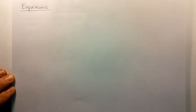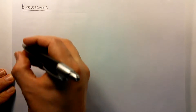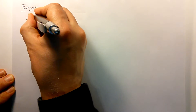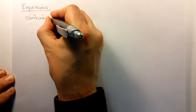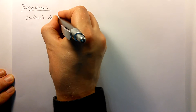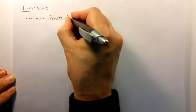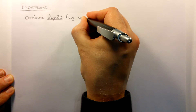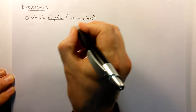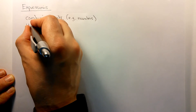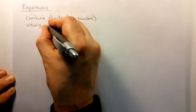Hello there and welcome to another tutorial. In this tutorial I'm going to describe how we form expressions in mathematics, and this will help us to form expressions properly in Python. Expressions combine together objects, for example numbers, and these are combined together using operations.